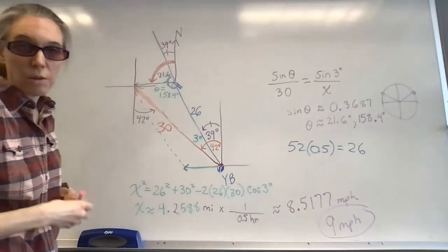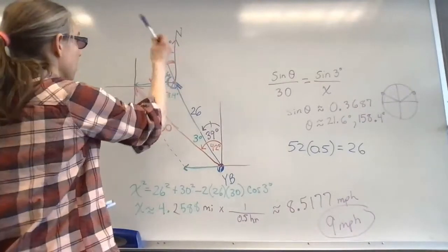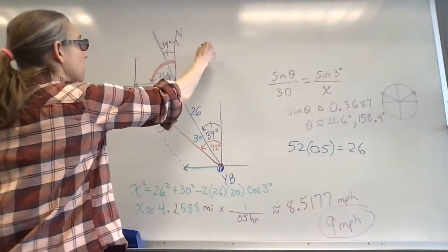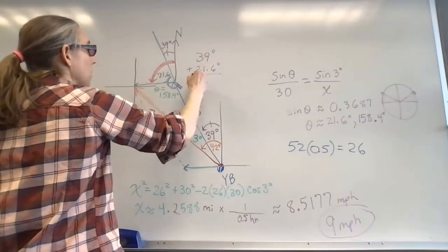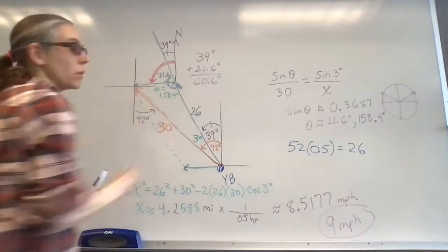So now we just need to add together 39 and 21.6, and we get 60.6.